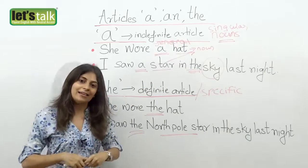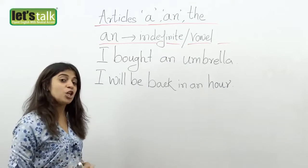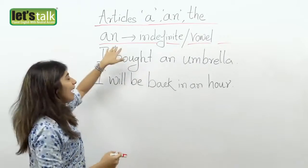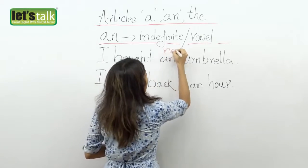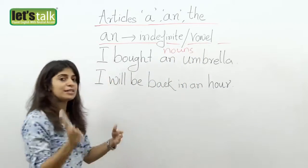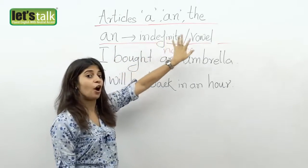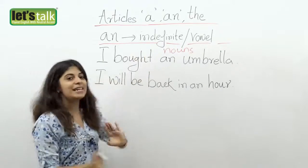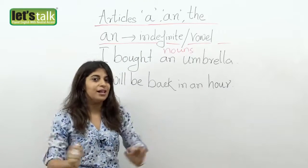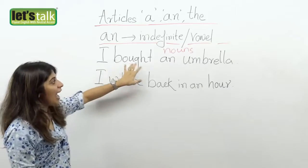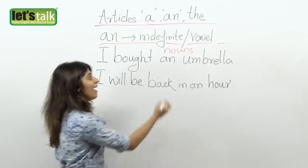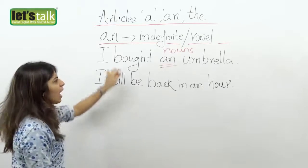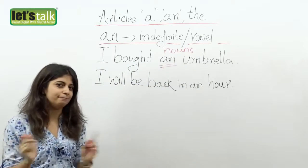Now let's look at the article 'an.' Just like 'a' and 'the,' it is used for nouns. And just like 'a,' it is an indefinite article — you're talking about something but nothing in particular, just in general. For example: 'I bought an umbrella.' Here 'an' is your indefinite article. But why do we say 'an umbrella' and not 'a umbrella'? Because 'umbrella' starts with the letter U, and U is a vowel.